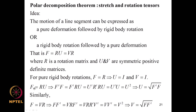To determine U: from F = RU we get F^T F = U^T R^T R U = U^T U = U², so U = √(F^T F). Similarly from F = VR, post-multiplying by F^T gives FF^T = V², so V = √(FF^T).